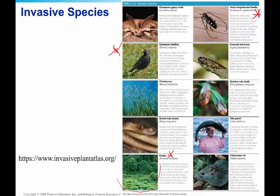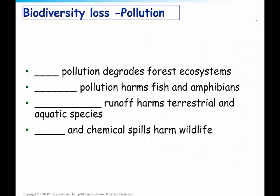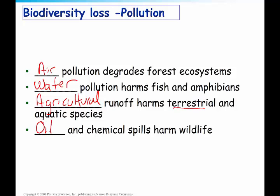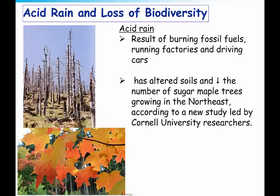Another cause of biodiversity loss is pollution. Air pollution degrades forest ecosystems, water pollution harms fish and amphibians, agricultural pollution or runoff harms terrestrial and aquatic species, and oil and chemical spills harm wildlife. Let's look at one form of pollution: acid rain. Acid rain is a result of burning fossil fuels, running factories, and driving cars. As emissions are released from burning fossil fuels, sulfur and nitrogen mix with water, and you end up with sulfuric acid and nitric acid.